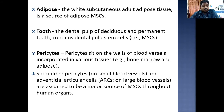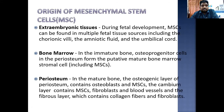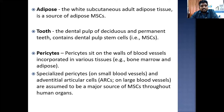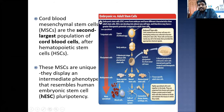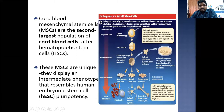Mesenchymal stem cells can be recovered from any of these sources, which act as sources for stem cell therapy. In this image we see embryonic versus adult stem cells. Embryonic stem cells come from the embryo and have different characteristics — they can develop into almost any cell type and therefore may have greater therapeutic potential compared to adult stem cells. From totipotent stem cells we progress to pluripotent, then multipotent, then more specialized cells.